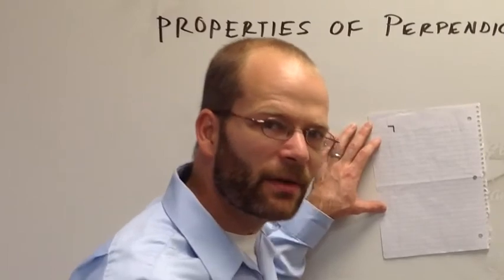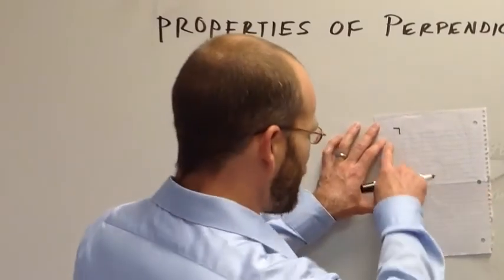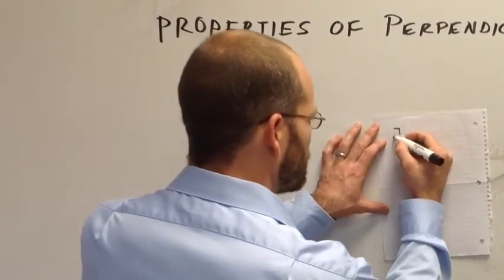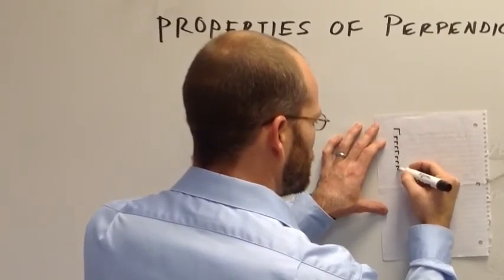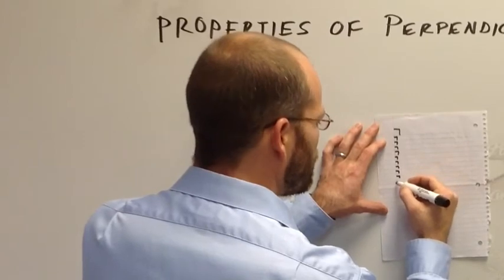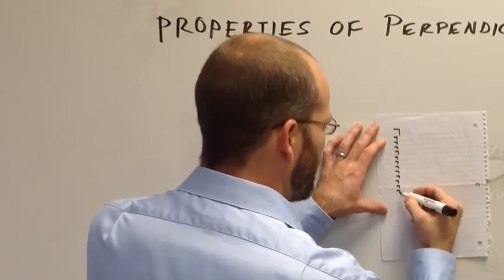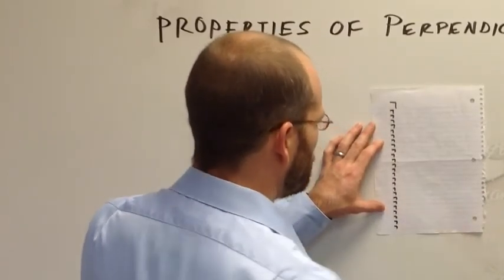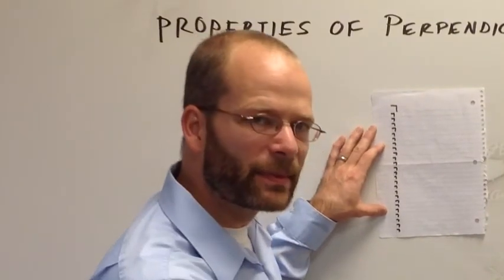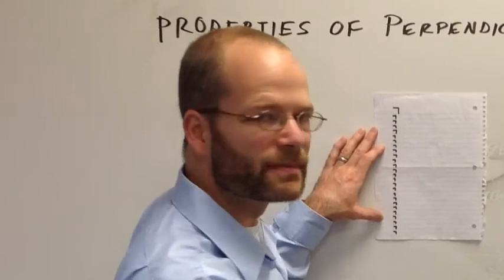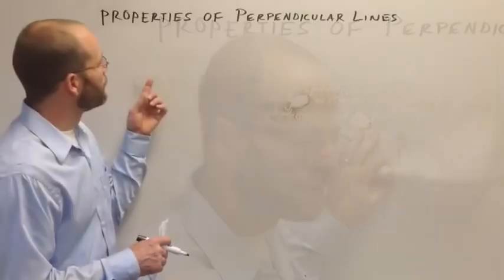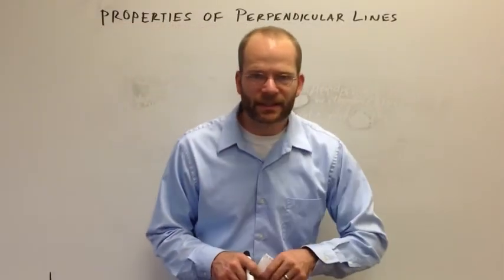On the other hand, suppose that all I knew was that the red line was perpendicular to each of these blue lines. But I didn't yet know whether the blue lines were parallel. Well, if I know the red line is perpendicular to all the blue lines, the second theorem allows me to conclude that all those blue lines must be parallel. Those are the properties of perpendicular lines that you need to be aware of.